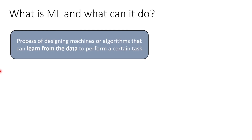Let us start by defining what machine learning is. Machine learning is the process of designing machines or algorithms that can learn from data to perform a certain task. The important aspect of the definition is learning from the data, and hopefully as we go through the content it becomes more and more clear what that actually means.